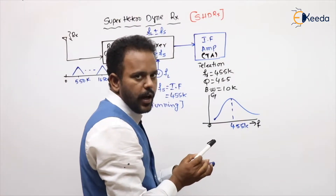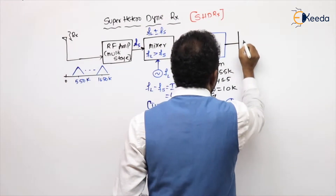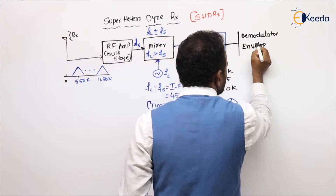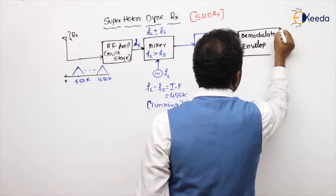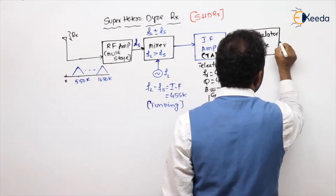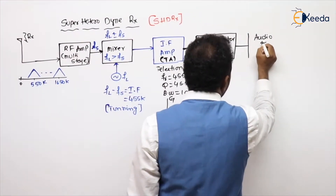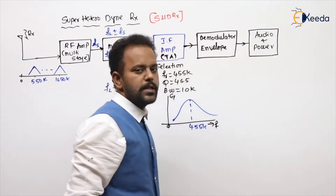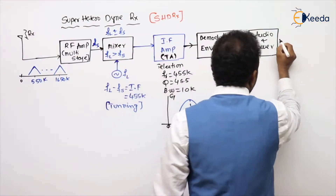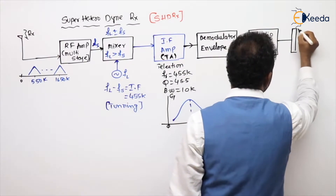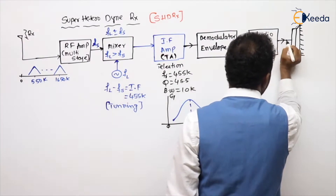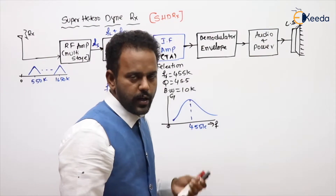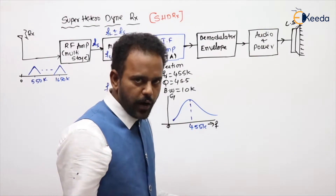After selection is done, we need to go for demodulation. For AM, we are using envelope detection as the demodulator. After envelope detection, we increase the audio levels using an audio amplifier — common emitter configuration — then increase the power levels using a power amplifier — class B. After that, we give the signal to the loudspeaker, which converts the voltage signal into the corresponding physical phenomenon: audio, which is nothing but pressure vibrations.